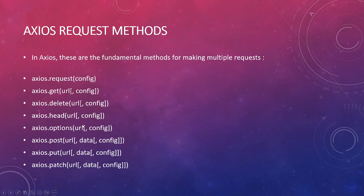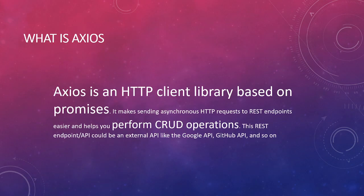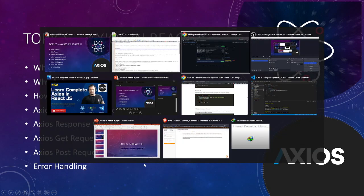When we send an HTTP request to remote servers or APIs, we get a specific response object back. The response object contains: data — the payload returned from the server; status — the HTTP status code; status text — whether it is OK or an error; headers sent by the server; config — the original request configuration; and the request object itself. Now let's do a practical example covering installation, GET request, POST request, and error handling.